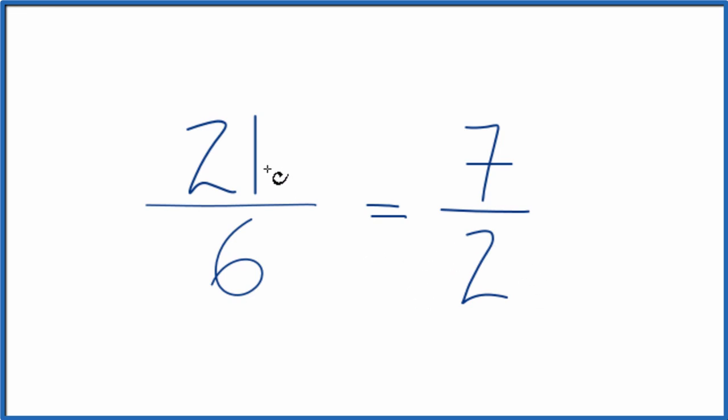So we could simplify 21 sixths down to 7 halves, or 7 over 2. The greatest common factor here is 3. Note that these are equivalent. If you divide 21 by 6 or 7 by 2, you're going to get the same decimal answer. We've just simplified or reduced this down to 7 over 2.